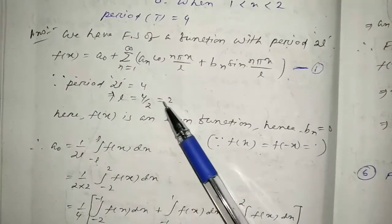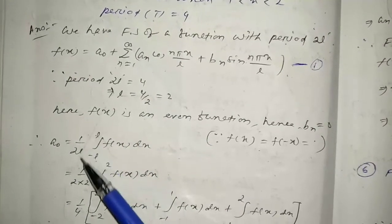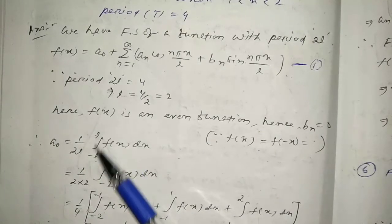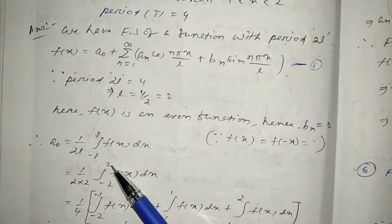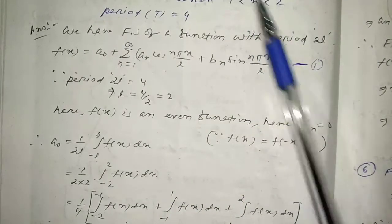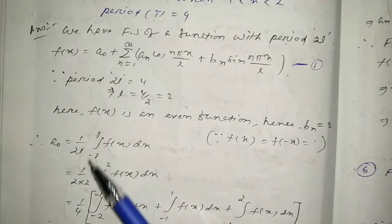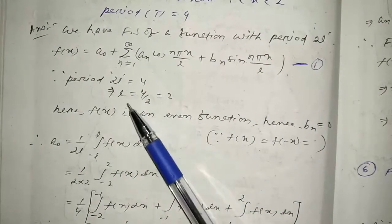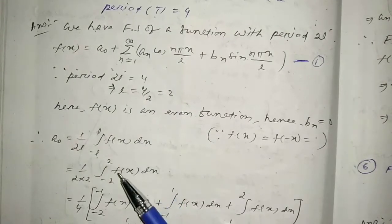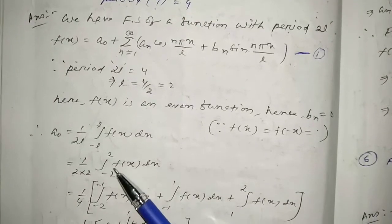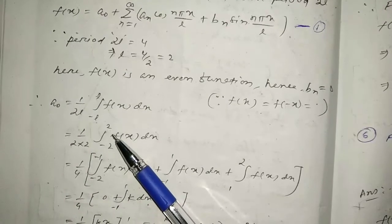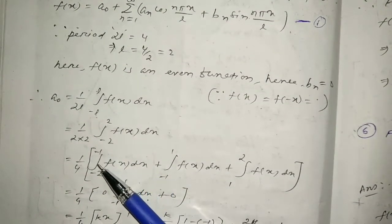So a0 = (1/4) integral from -2 to 2 of f(x) dx. We divide this interval into three parts: from -2 to -1, from -1 to 1, and from 1 to 2, corresponding to the three different values of f(x) in those sub-intervals.